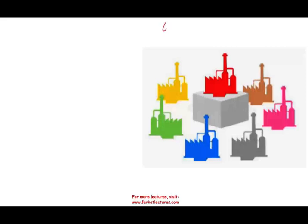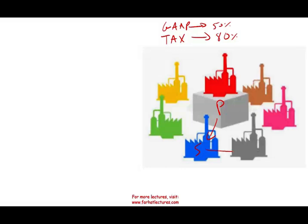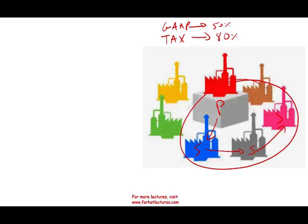If you remember under GAAP, to consolidate you have to own 50% plus. Under tax, you have to own 80% — so notice, it's more. If we have a parent and a subsidiary, if the parent owns more than 80% of the subsidiary, they can consolidate. If this subsidiary owns another subsidiary, then all of these are in the same group.